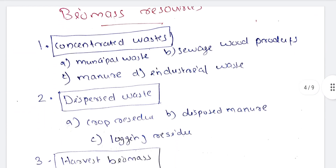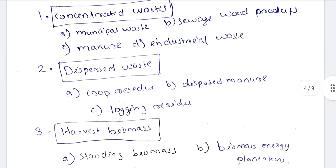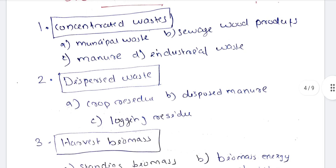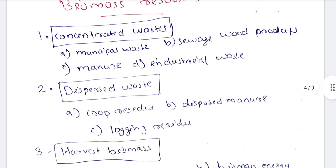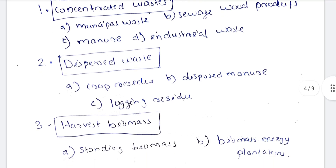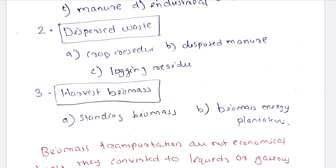Next, we have biomass resources. For introduction, we have classified waste in three levels. One: concentrated waste — there is municipal waste, sewage, manure, and industrial waste. Two: dispersed waste — examples are crop residue, dispersed manure, and logging residue.